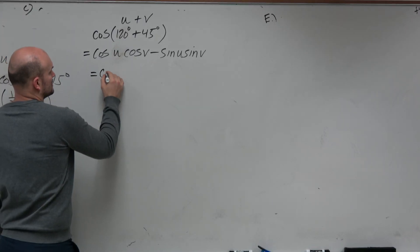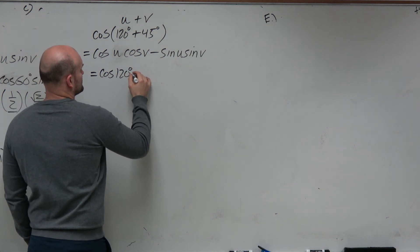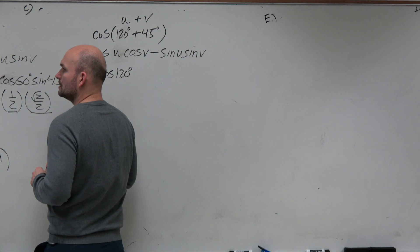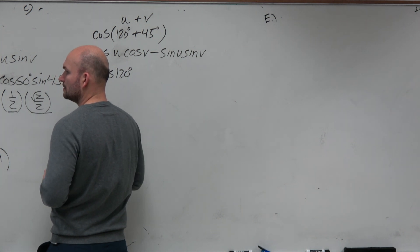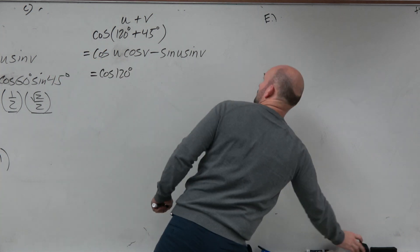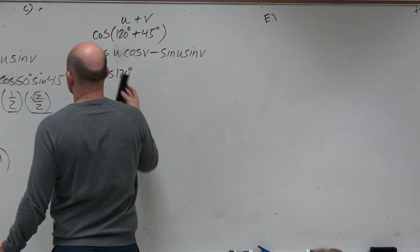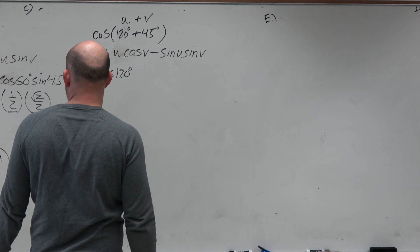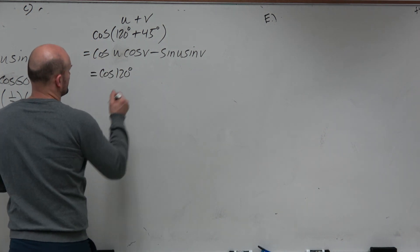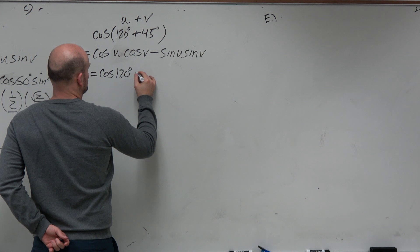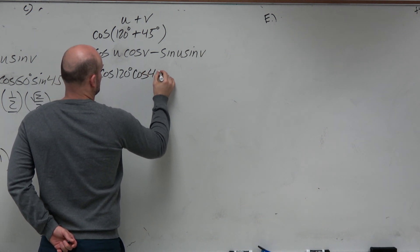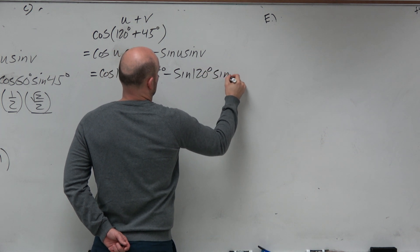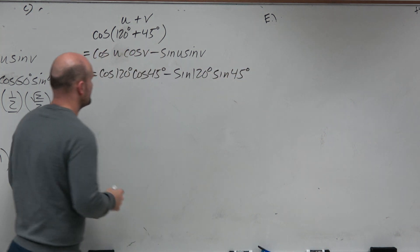So cosine of u — that's going to be the cosine of 120 degrees. This one's going to be... so this will be cosine of 45 degrees, minus the sine of 120 degrees times sine of 45 degrees.